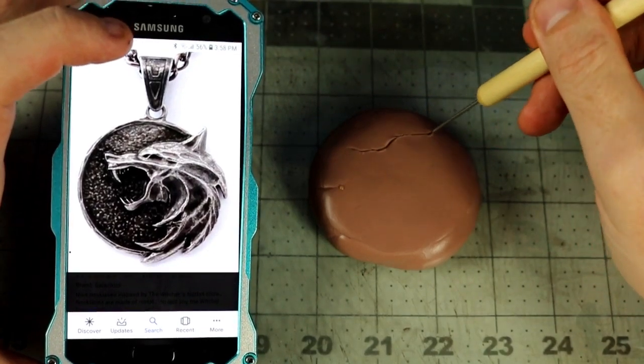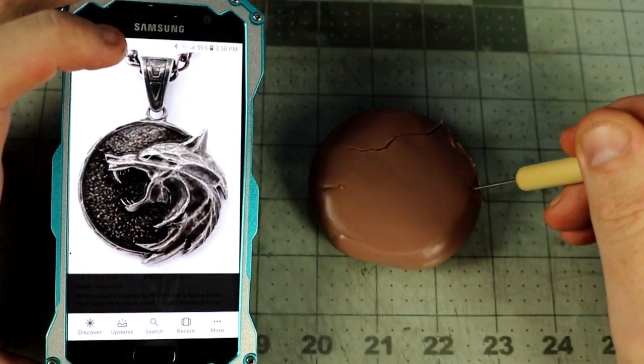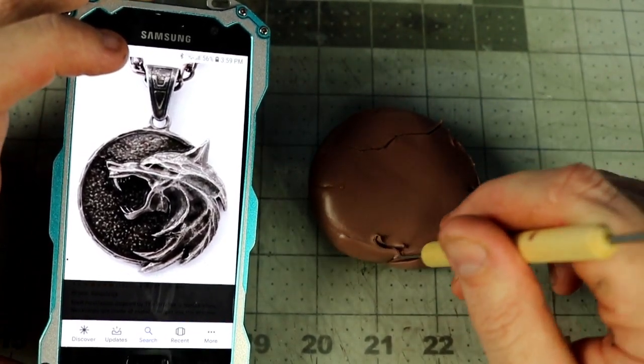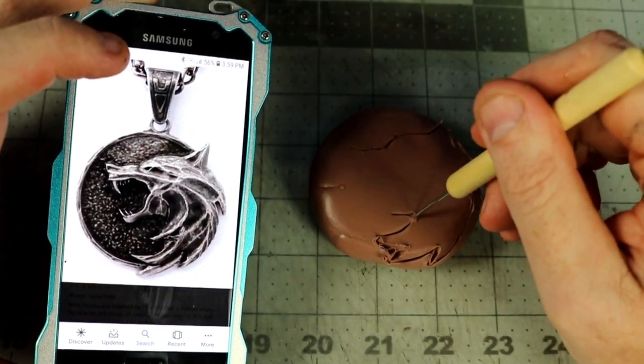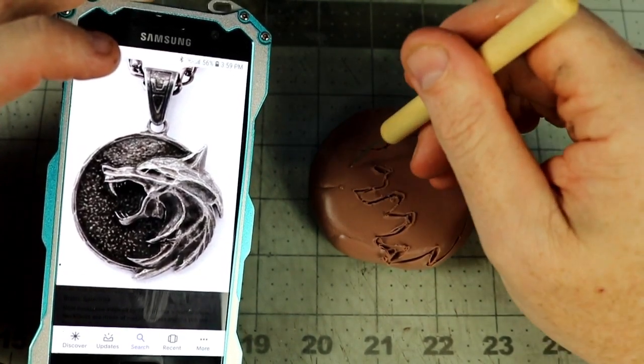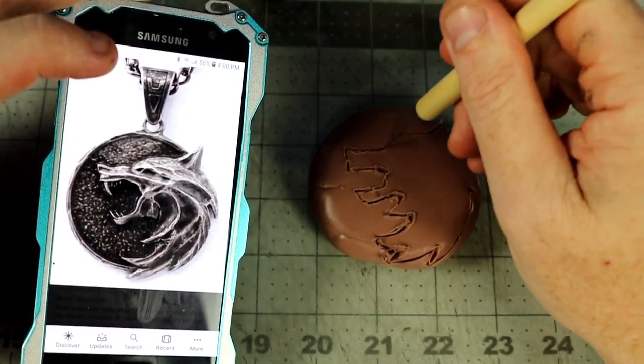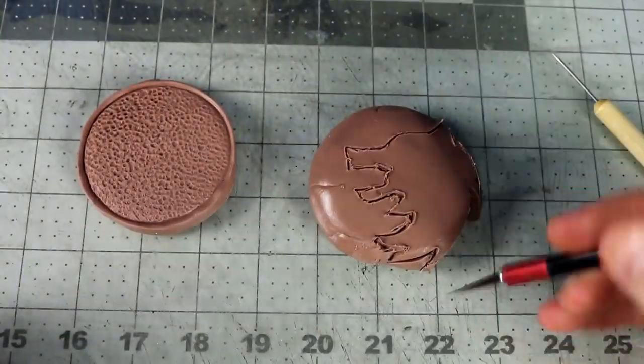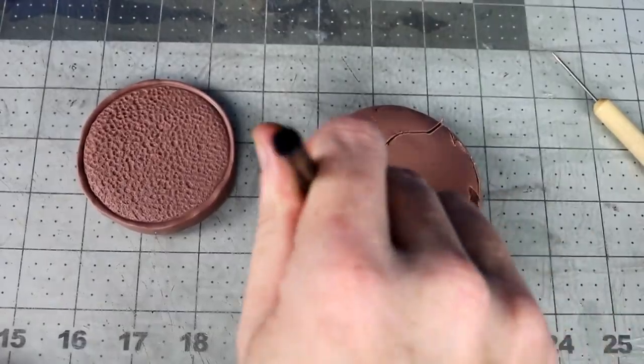Then to get the base shape of the wolf I draw out the contour with this pick and use a hobby knife to cut off the rest of the way. Then it is simply carving out or adding material to the wolf head to get close to my reference image. Once I'm done then I join the two parts by heating the attachment points up a little bit.